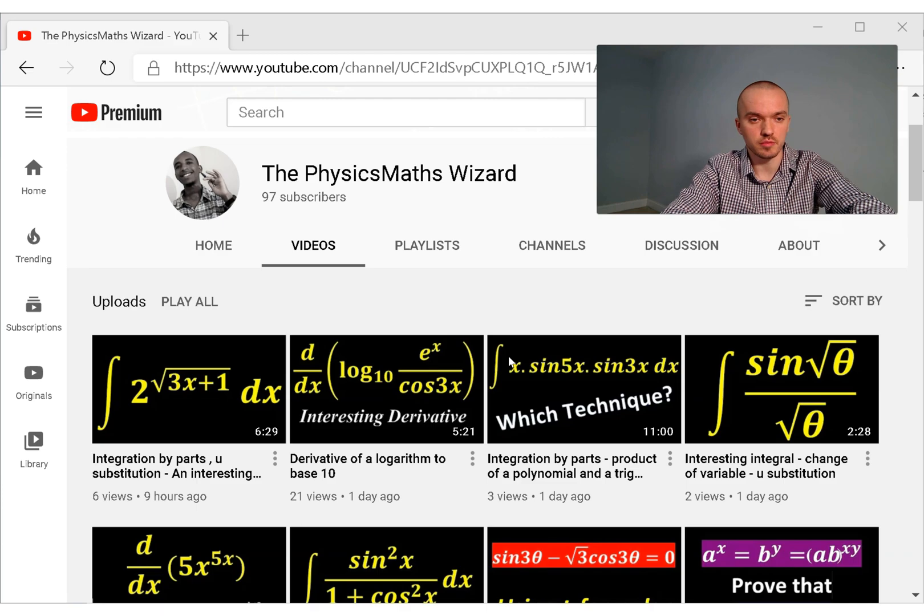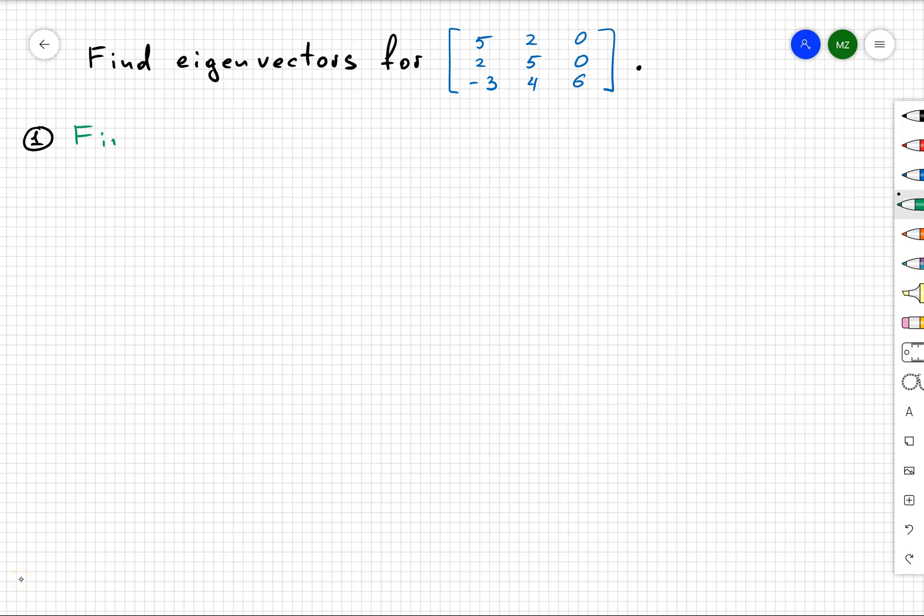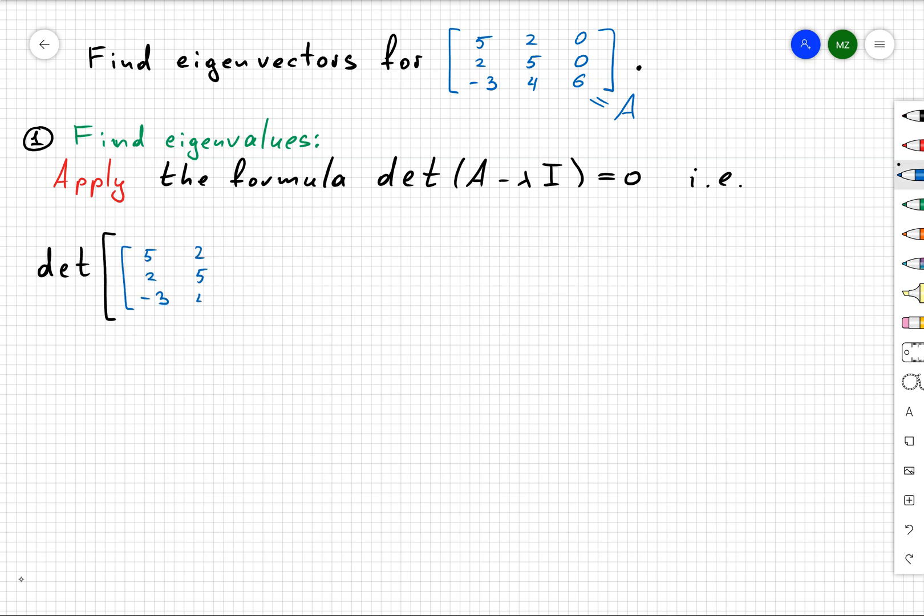So let's start to do the new problem. Before we want to find eigenvectors, we need to find eigenvalues. For that, we need to apply the formula det(A - λI) = 0. In this case, our matrix is given as that blue matrix and we're going to subtract identity matrix times lambda.